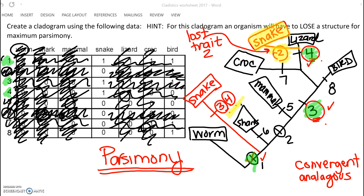My guess is that these traits are all just numbers, but if you wanted to apply it to real traits, I'm thinking that trait number two might actually in real life have represented legs. That would make sense - originally the snake came from an ancestor that had legs. Legs appeared after the shark, because the worm doesn't have legs and the shark lives in water, so legs appeared as organisms moved to land. All these organisms past this point had legs, but a mutation happened and the snake lost the legs. That would be the tree that makes the most sense. This is actually a very difficult cladogram, and I seriously doubt they would give you something this difficult on the AP exam, but I wanted to give you a walkthrough of it since it is on your homework sheet.